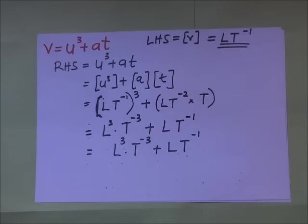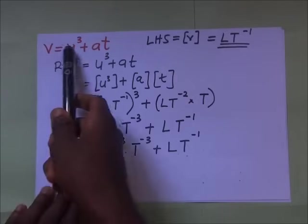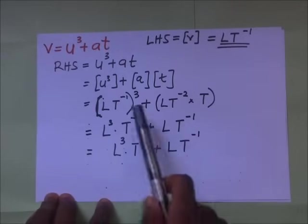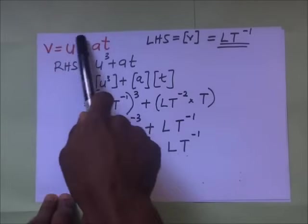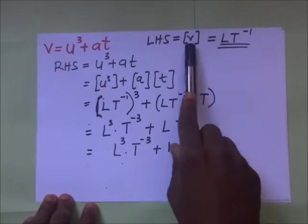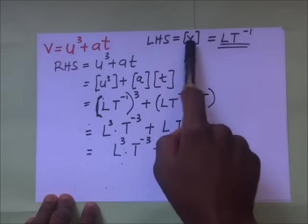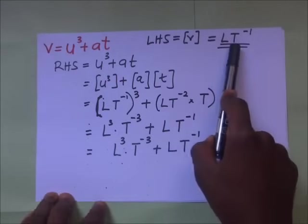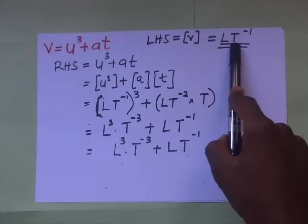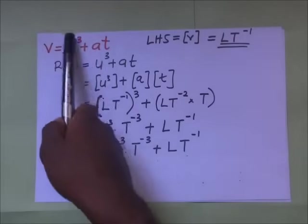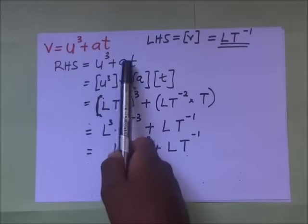Moving to our next example, we have V = U³ + at. On the left-hand side, V is velocity, and the dimensions of velocity are LT to the power negative 1, as derived in our previous video. On the right-hand side we have U³ + at, so we work towards finding the dimensions of the right-hand side.